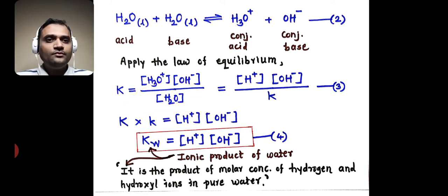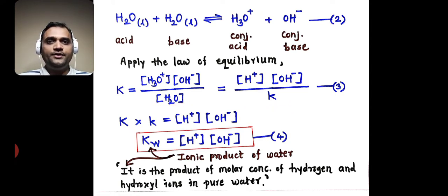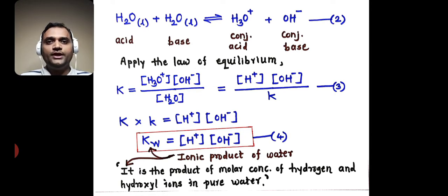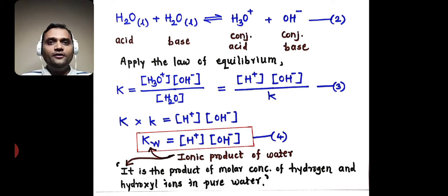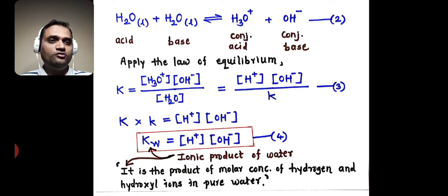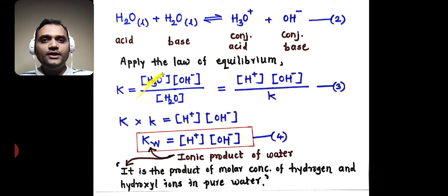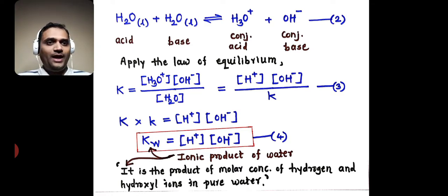The molar concentration of water is taken as a constant. Why constant? Because water is a weak electrolyte. Therefore, in our solution there is a large quantity of water which is undissociated or unionized. Therefore, the molar concentration of water is taken as a constant. The molar concentration of hydronium ion is equal to the molar concentration of hydrogen ion, so instead of H3O+ we can write H+.